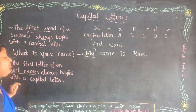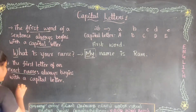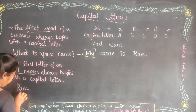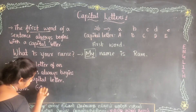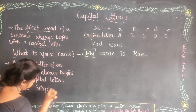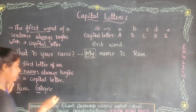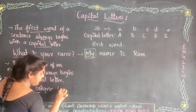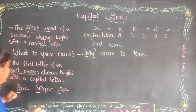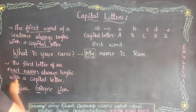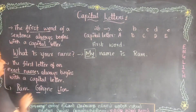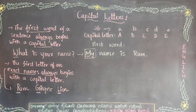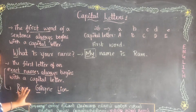Let me give you one or two examples. Ram — that is the name of a person. Tinji — that is the name of a place. Lion, elephant — names of animals. These are all exact names. And the first letter of each — R, L — these are all capital letters.